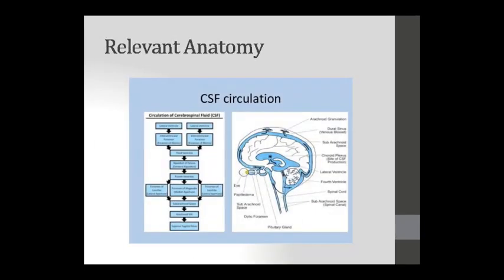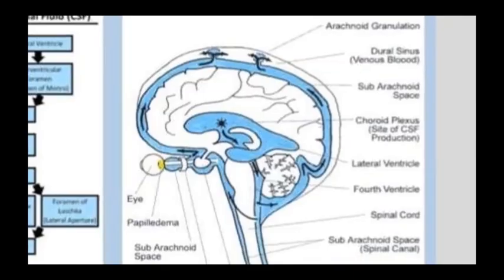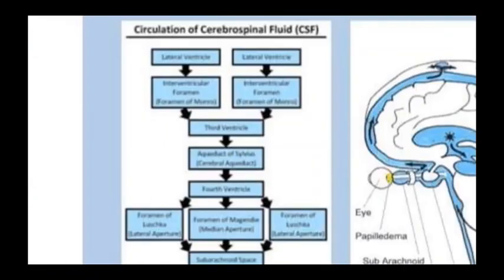Relevant anatomy is described here — see how CSF circulates. Arachnoid granules are shown; this is the dural sinus in which venous blood travels. The subarachnoid space is shown. Blood travels through the choroid plexus, which is the site of CSF production. CSF is produced at the choroid plexus. From the lateral ventricles it travels through this pathway.